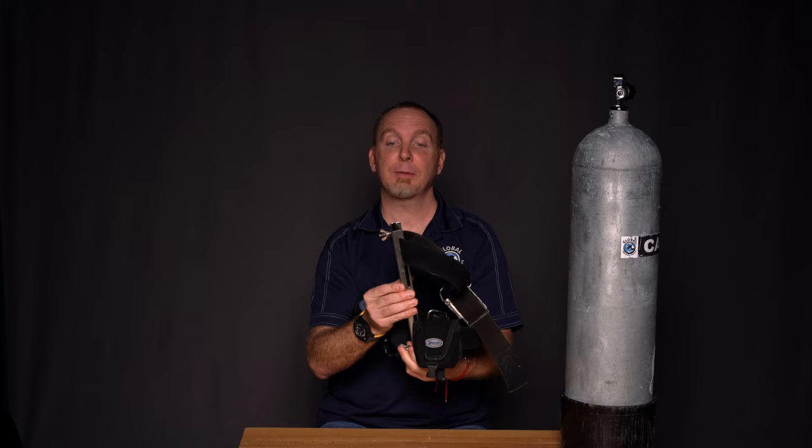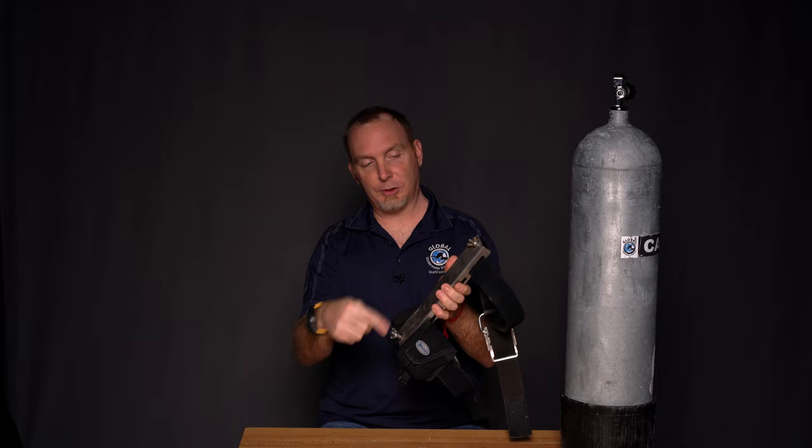What you will find is that all backplate and wing systems, or most backplate and wing systems, have one thing in common, and that's this piece of equipment here which is called the STA or single tank adapter, which comes with two screws that are spaced to fit the standard spacing of holes on pretty much every backplate and wing.